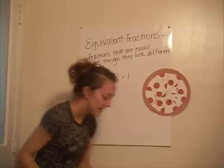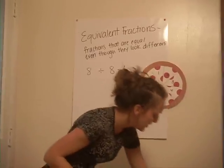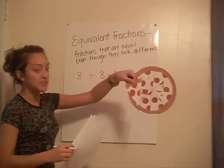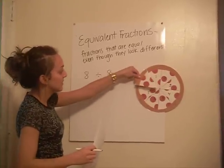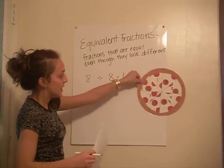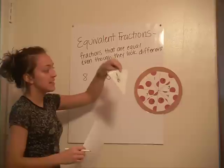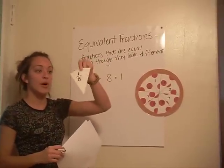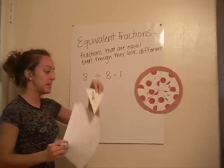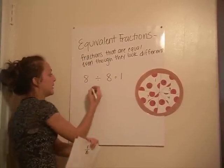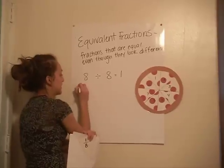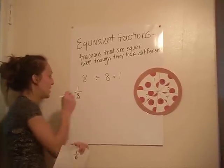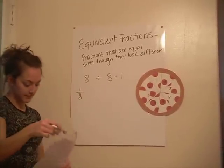So each person would get 1 slice of pizza. Therefore, we have 1 slice of pizza here, and if each person gets 1 of these, each person gets 1 of the 8 slices. Therefore, each person gets 1 eighth of the pizza.